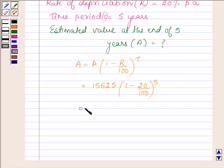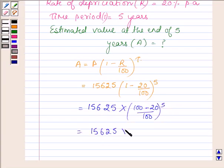So this is further equal to 15,625 into 100 minus 20 upon 100 raised to the power 5, which is equal to 15,625 into 80 upon 100, which is 4 upon 5 raised to the power 5.